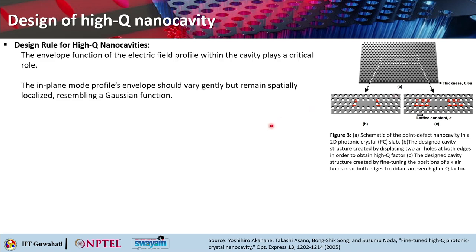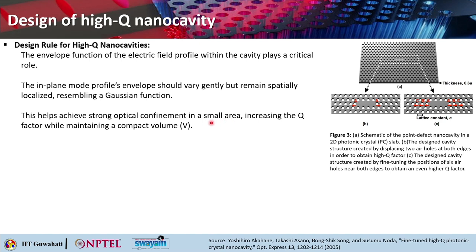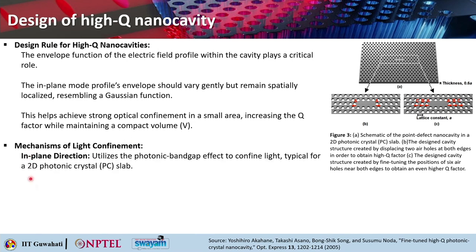The important design rules for achieving high-Q nano cavities relate to the envelope function of the electric field profile within the cavity. The in-plane mode profile's light envelope should vary gently but remain spatially localized, resembling a Gaussian function. This helps achieve strong optical confinement in a small area, increasing the quality factor while maintaining a compact volume.